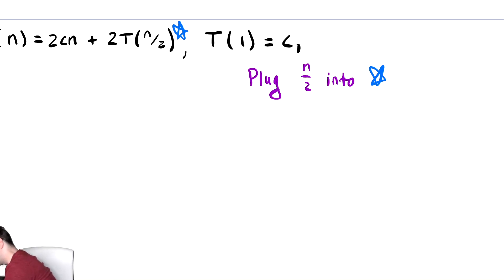Now we have T of n over 2 on the left-hand side equals 2c times n over 2 plus 2 times T of n over 2 over 2. With some simplification, we get T of n over 2 equals cn plus 2T of n over 4, since n divided by 2 divided by 2 is n divided by 4.